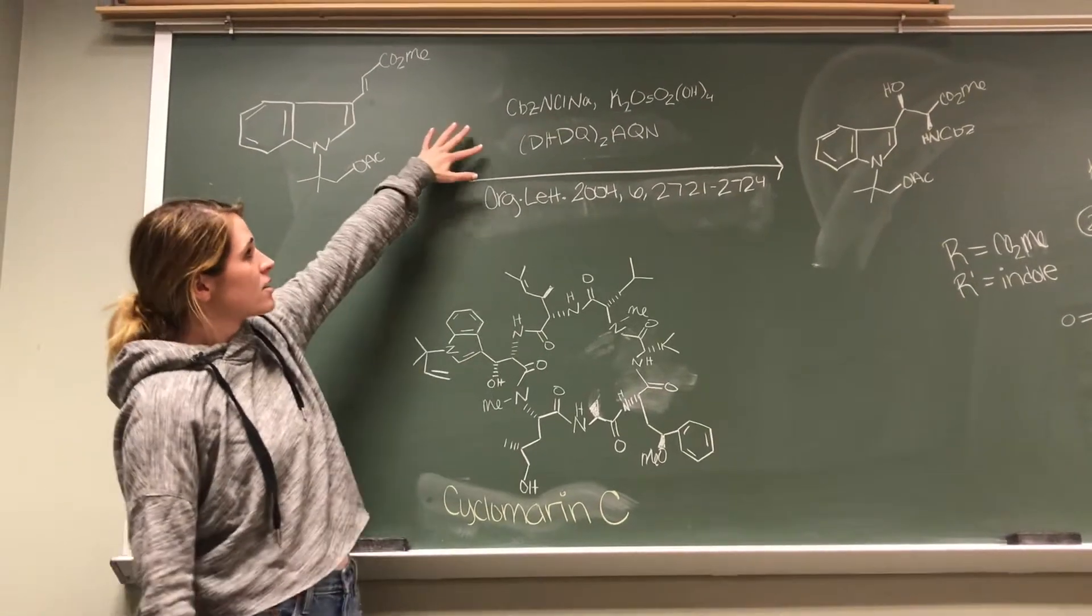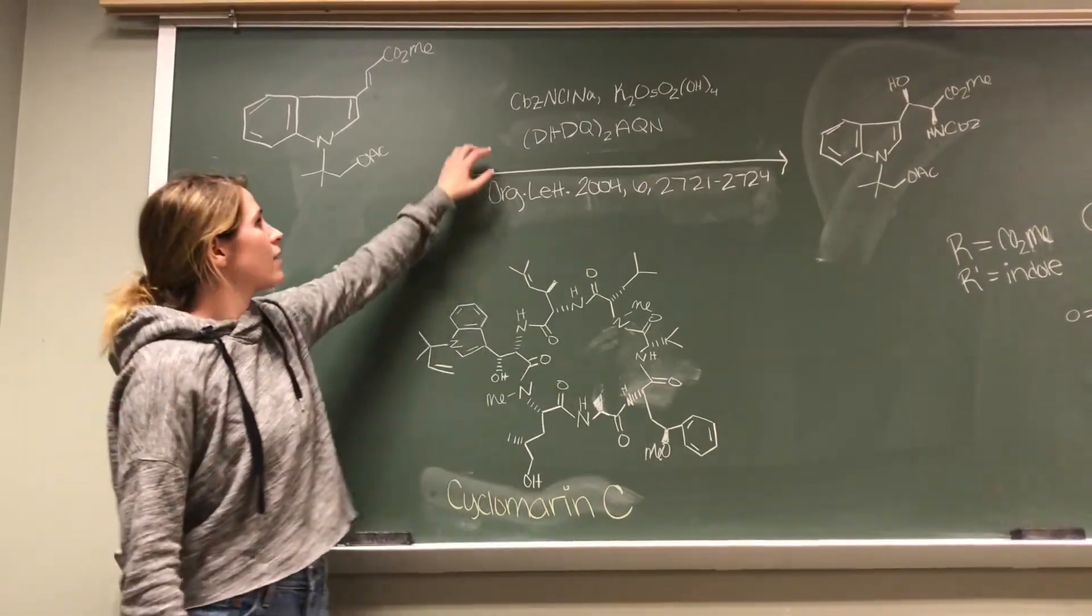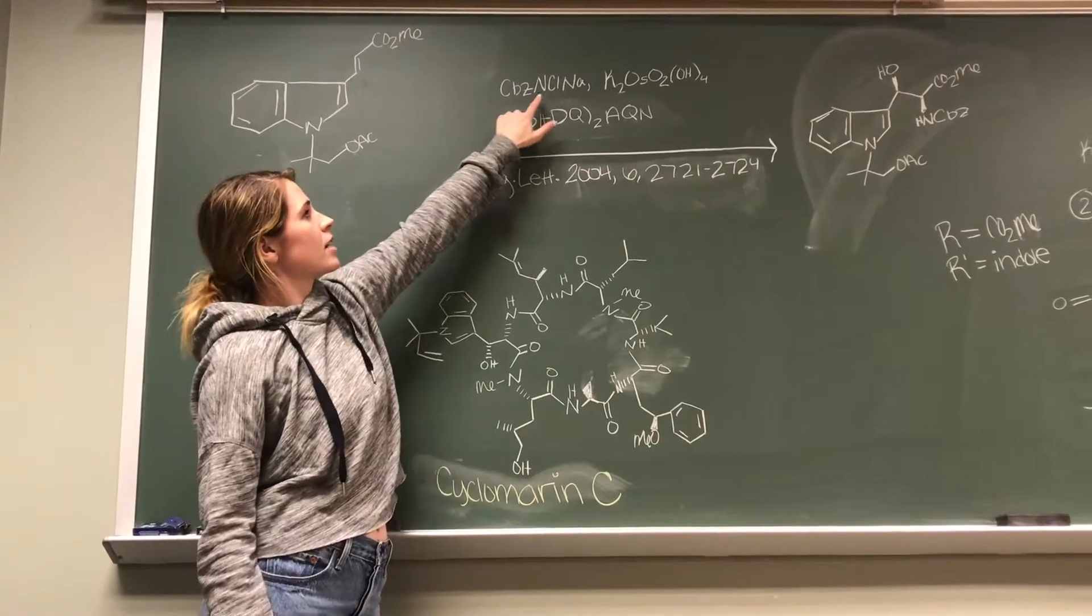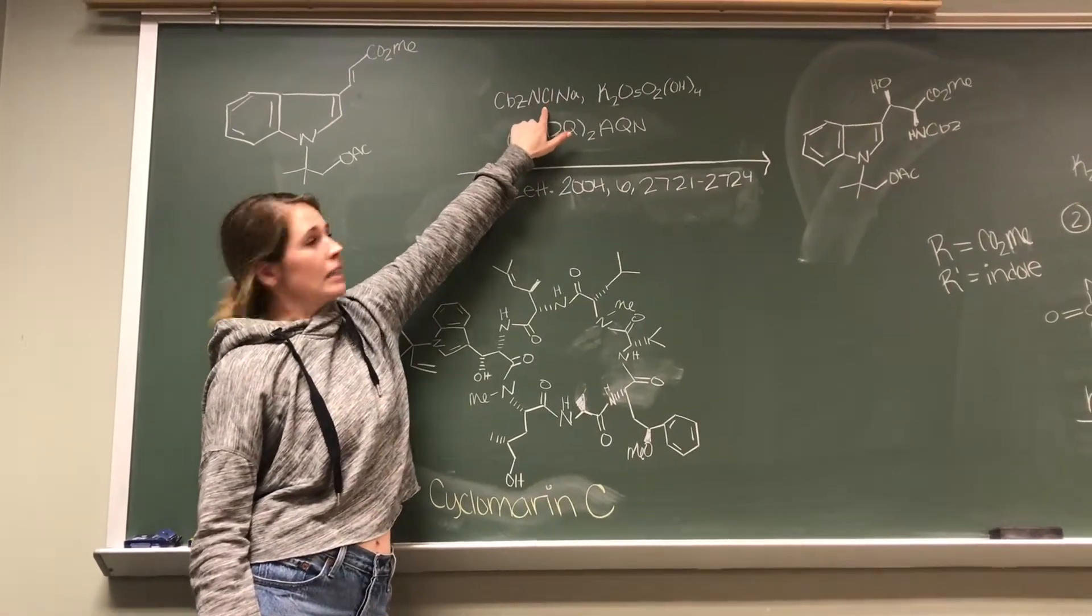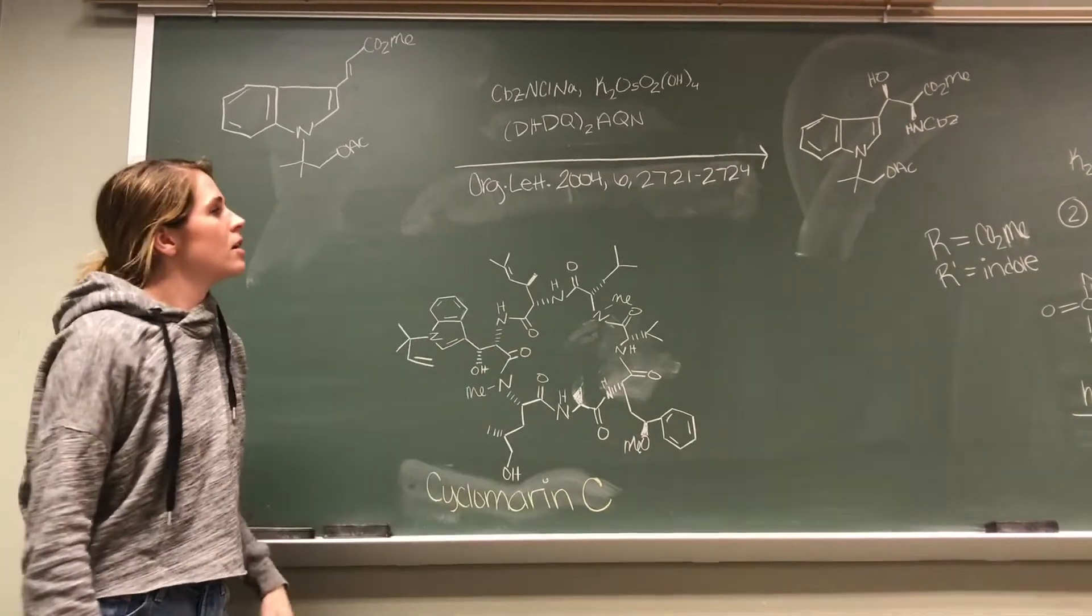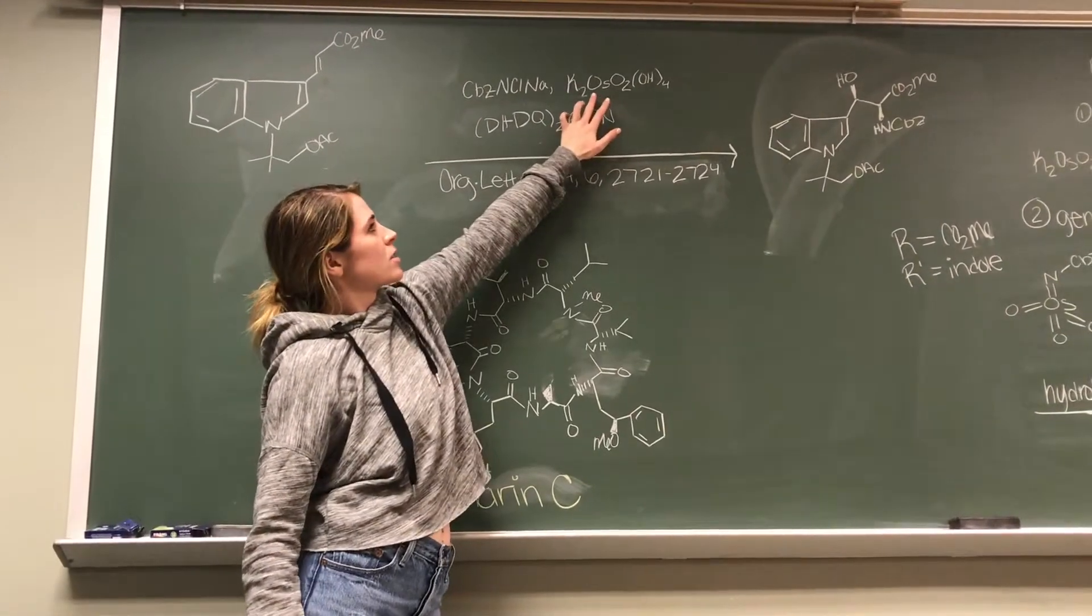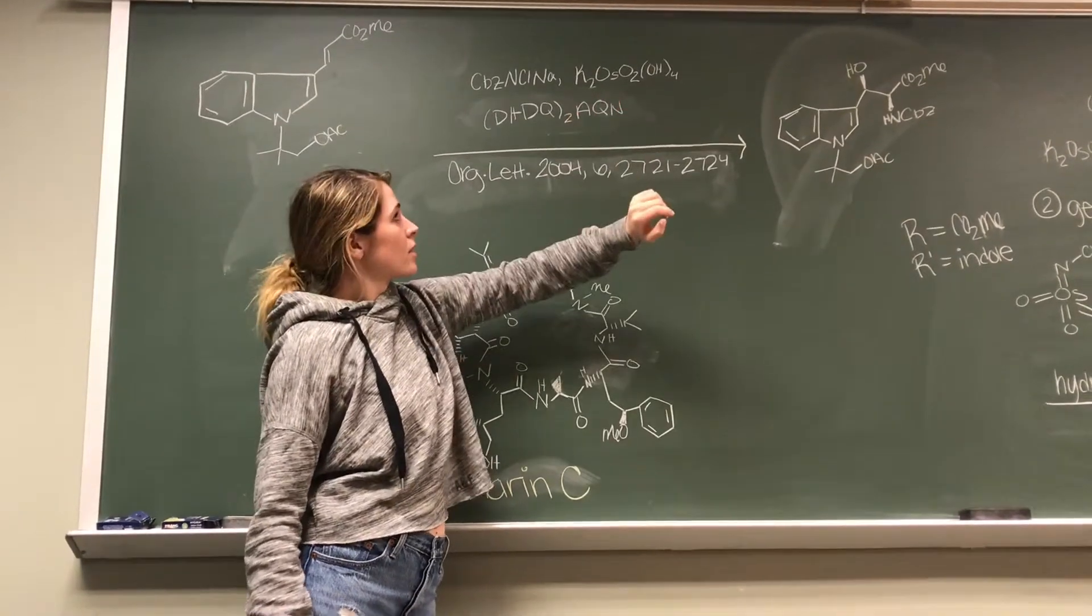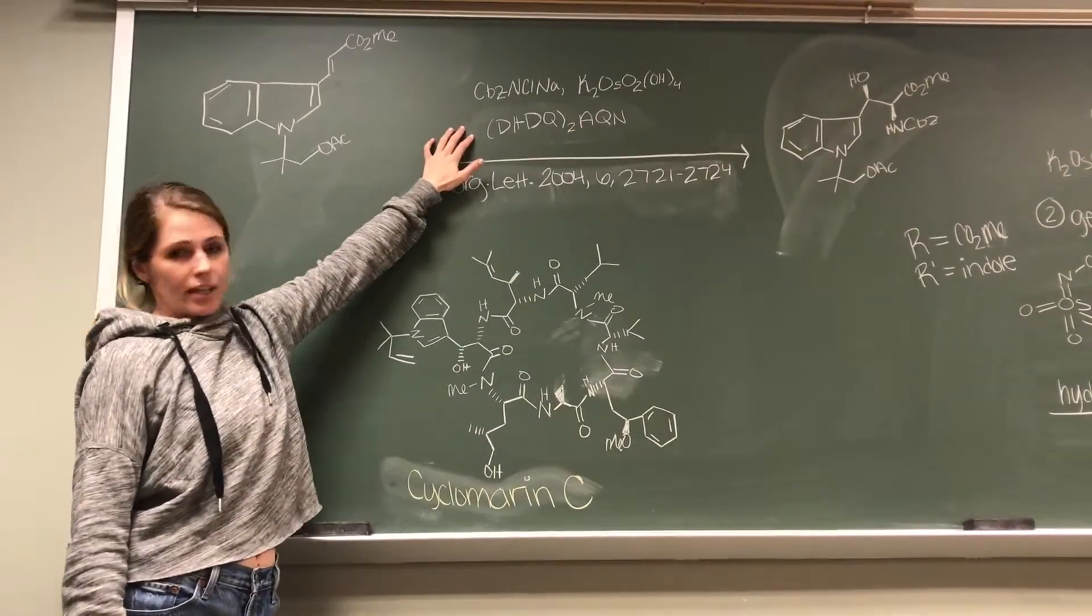We can look at the reagents and see similarities that we talked about earlier, where we have our salt, which is nitrogen, with our chlorine, which is a good leaving group. And then CBZ is just a protecting group. Then this is going to be our source of the osmium tetroxide catalyst that we had talked about earlier. And then this is our chiral ligand.